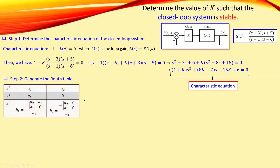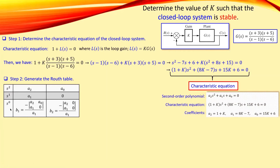This is a second-order system, and for the second-order system we have the following general Routh table. From the characteristic equation we can determine the values a2, a1, and a0. Looking at the s-squared coefficient compared with our characteristic equation, a2 must be 1 plus K. In a similar form, we have a1 and a0.